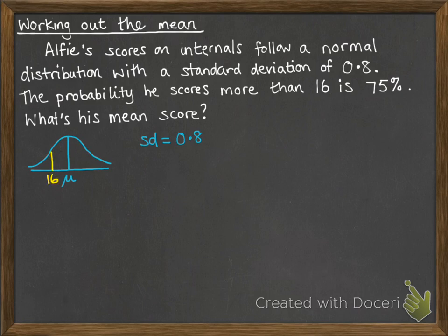The standard deviation we're told is 0.8. And we've got this marker here of 16 in the question, and the probability he scores more than 16 is 75%, which means we want everything on the right to be 75%. Note that 16's got to be less than the mean for that to happen since there's a half on each side of the mean. So this area here will make the 75%.